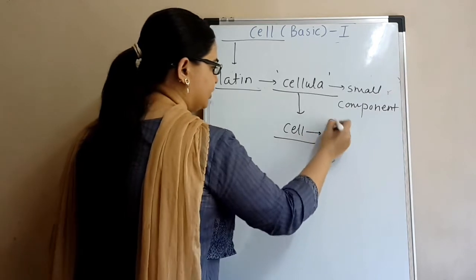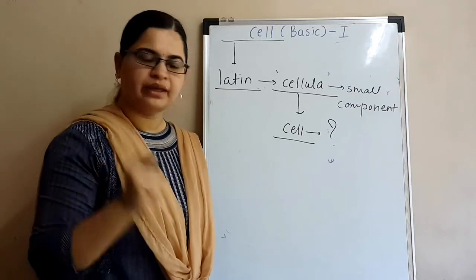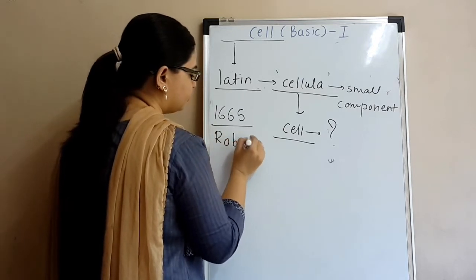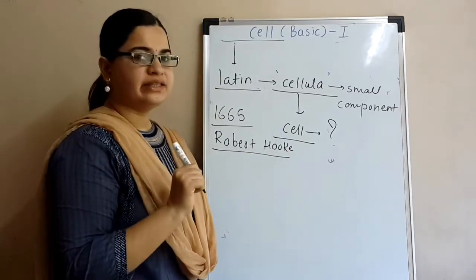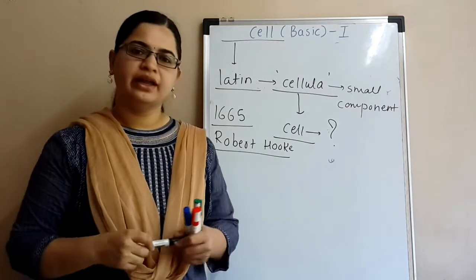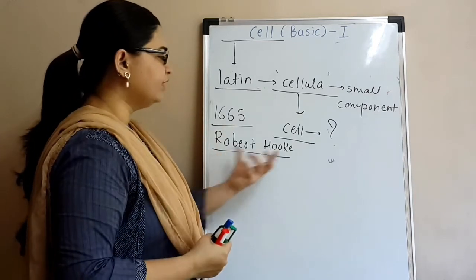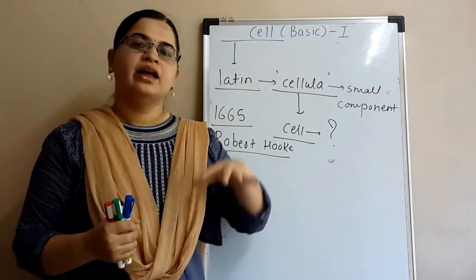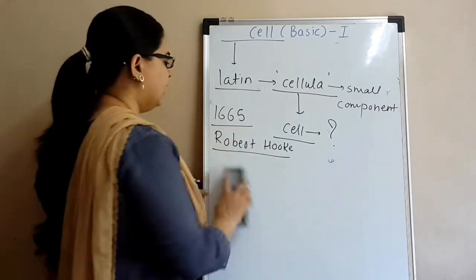Who discovered the cell? There must be some scientist who discovered the cell. First, in 1665, Robert Hooke discovered the cell. He first discovered the cell. But the cell he discovered was a dead cell. He discovered dead cell. But then he was the one who gave the term cell in 1665. Remember this - Robert Hooke, remember his name. You may have studied this basic thing in 9th or 8th standard. Remember his name with the year.